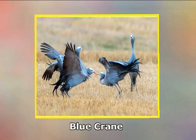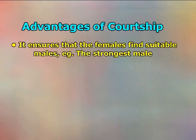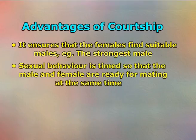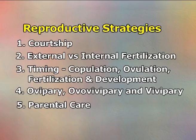This helps the female choose the male that can reinforce pair bonding and promises healthier offspring. For example, the blue crane has a complex courtship display that involves a long, complex series of calls as well as elaborate dances by the male. The advantages of courtship are that it ensures females find suitable males — for example, the strongest male — and that sexual behaviour is timed so that the male and female are ready for mating at the same time. The males expend the most energy, leaving the female more energy for breeding.